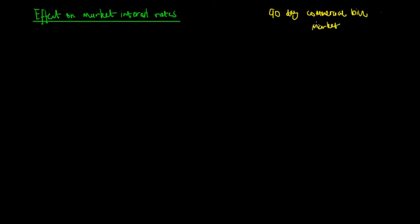The RBA can conduct monetary policy through manipulating the supply of money, or the monetary base, in order to change the target cash rate or the actual cash rate in the overnight money market. The RBA can only affect the overnight money market, which is a market of unsecured loans and securities, but it can't directly affect every single market.